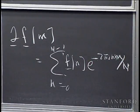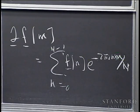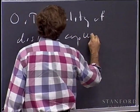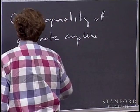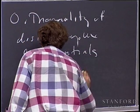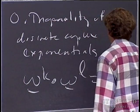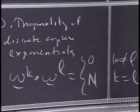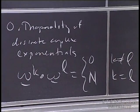I remind you of the important property of the discrete exponential that makes so much happen. In the discrete case, that's the orthogonality. The orthogonality of the discrete complex exponentials says that if I take the k-th power of omega and take the inner product with the l-th power of omega, that's either equal to 0 if k is different from l, or it's equal to N if k equals l.